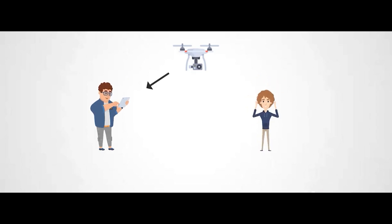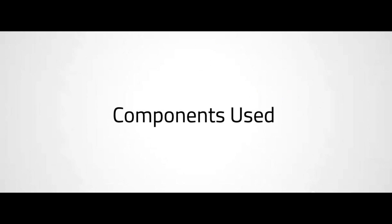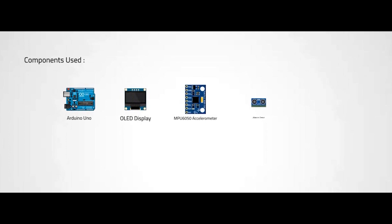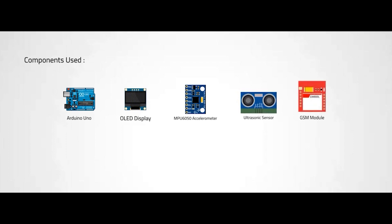Within that time we can send awareness information to the authorized person. Components used: Arduino — used to control all other components; OLED display — used to display a message when it detects an obstacle; gyroscope module — used to check the orientation of the drone; ultrasonic sensor — used to detect any obstacle from all sides of the drone; GSM SIM800C module — used to send a message to an authorized person.